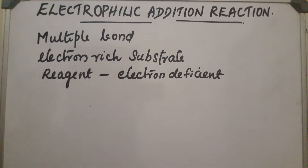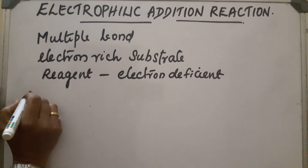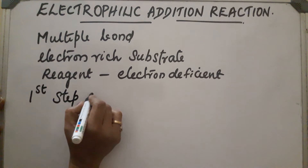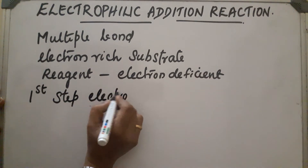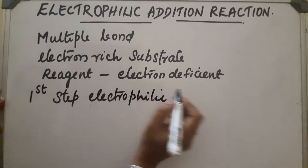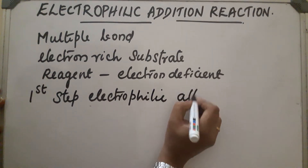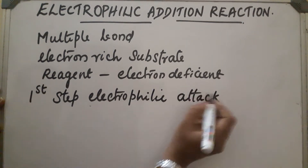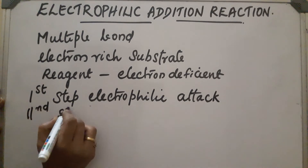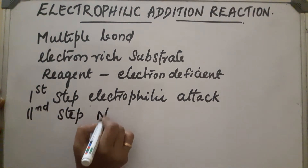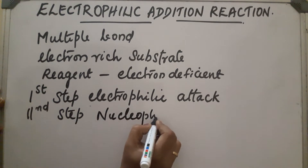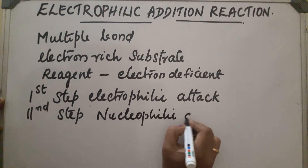It is a two-step process. The first step is the electrophilic attack, and the second step is the nucleophilic attack. Let us see them one by one.